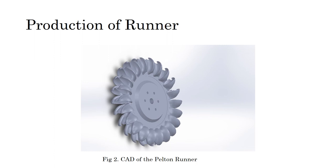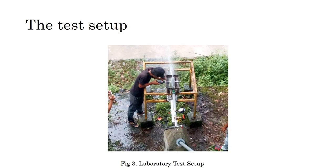Before the testing process is initiated, there are a few prerequisites: the production of the prototype and the preparations for the testing setup. The production of the runner using computer-aided design data can be seen in Figure 2, and the laboratory test setup is shown in Figure 3, located at the Turbine Testing Lab at Kathmandu University. A tachometer was used for RPM measurement, a Prony brake dynamometer for torque measurement, and an ultrasonic flow meter for discharge measurement. A manually operated spherical valve was used to vary the discharge.